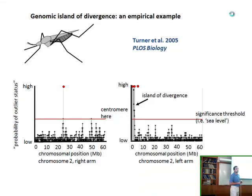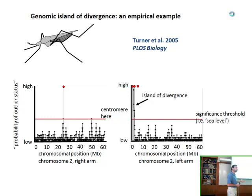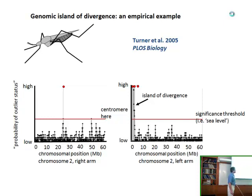One of the classic studies establishing this speciation island thinking was done by Tom Turner from Davis, looking at mosquitoes in the M and S forms. They did a systematic scan using microarray hybridization to characterize levels of divergence between these two forms. The take-home message was that they found just a few regions of the genome that exceeded the threshold sea level, and they coined the term genomic islands of divergence to characterize these regions.